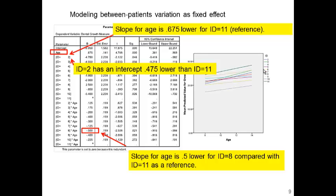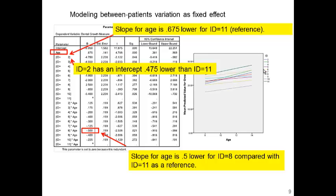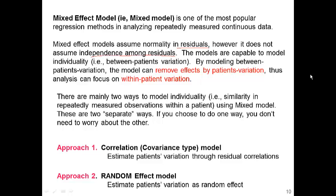What we want to see is the girls as a group — whether the effect of age is positive, whether growth measurement increases with age. So we are interested in the population average, not comparing between two different girls. This model does fit the data well, but it does not answer our question. One way to deal with between-patient variation is to model correlation among repeated measures, as we learned in a previous video.